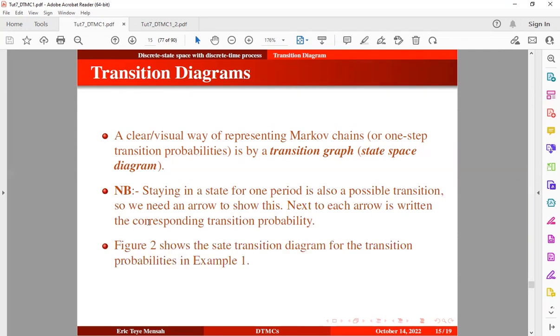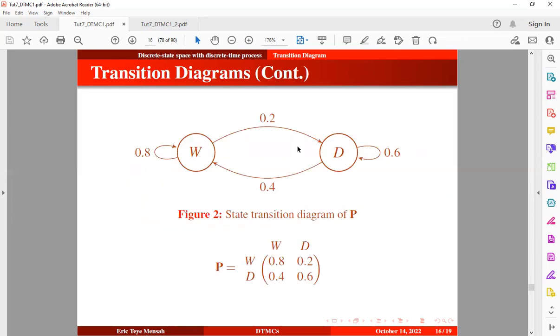Now figure 2 shows the state transition diagram for the transition probabilities in example 1, so let me click on that. So this is the state transition diagram for this transition probability matrix.